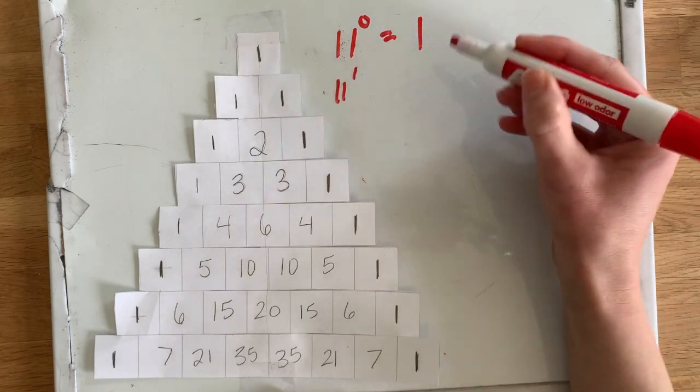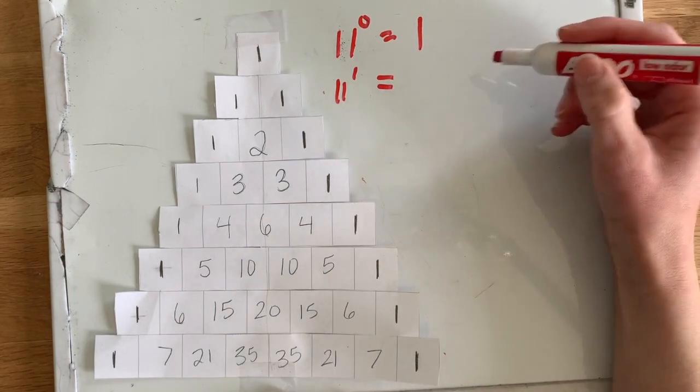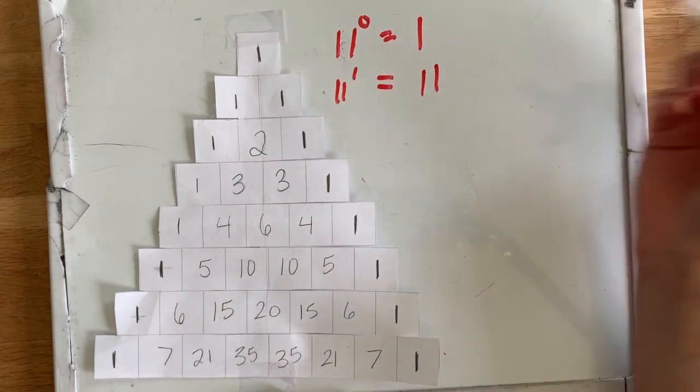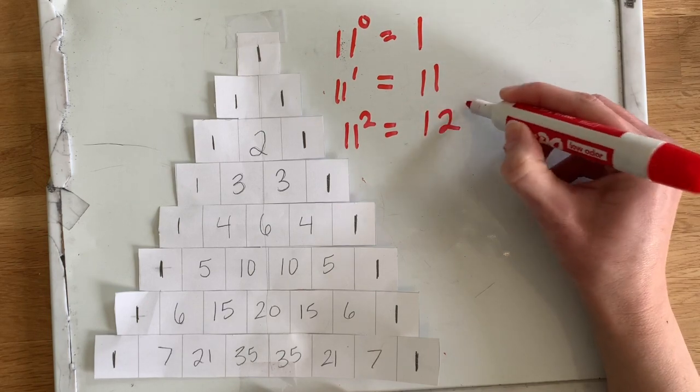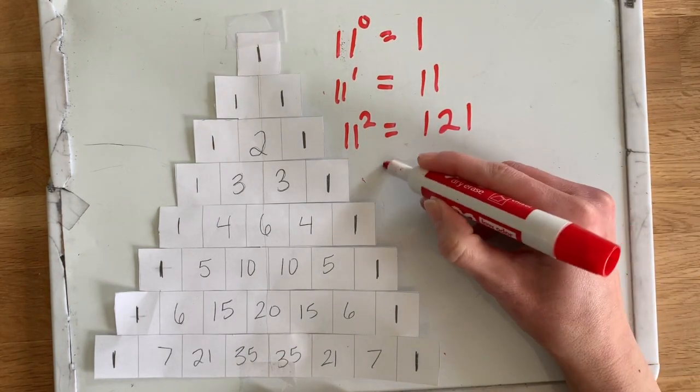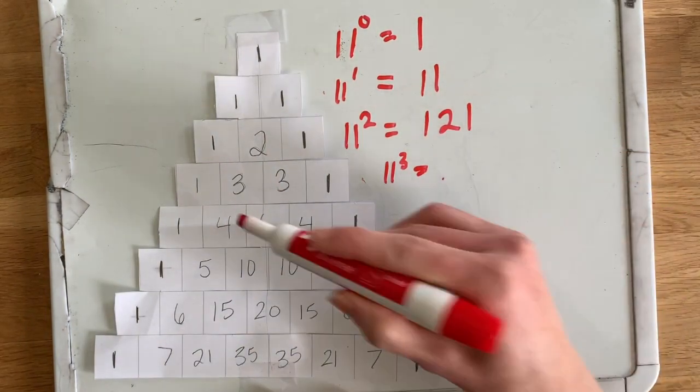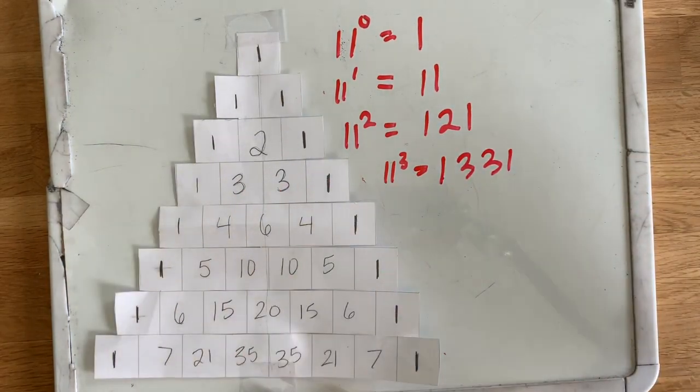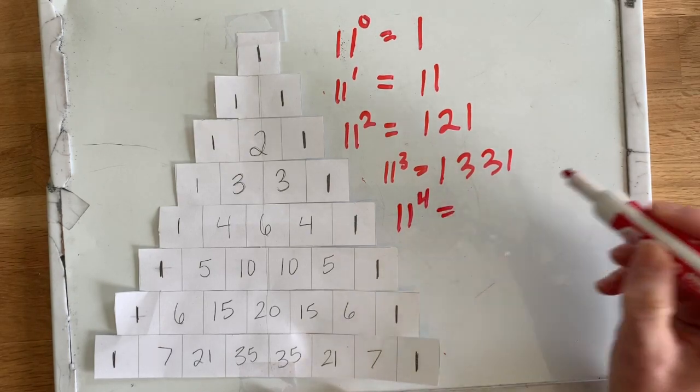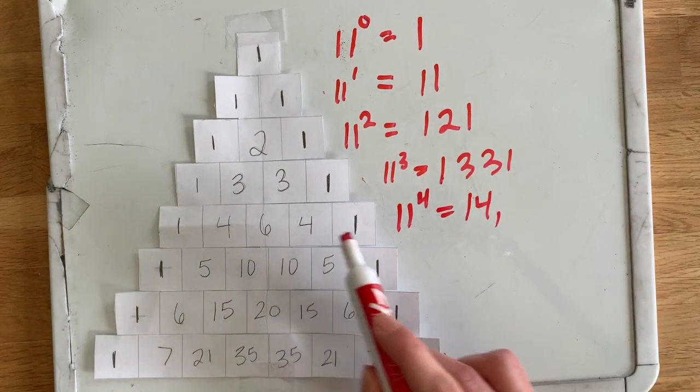So we have exponents of 11 on our horizontal rows. So 11 to the zero power, anything to the zero power is one. 11 to the first power is 11. 11 squared means we're multiplying 11 by itself, so 11 times 11 is 121. 11 cubed, 11 to the third power, is 1331.